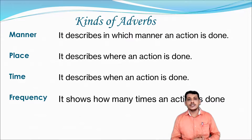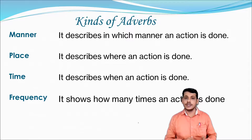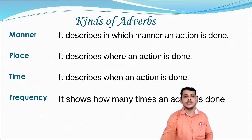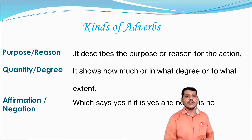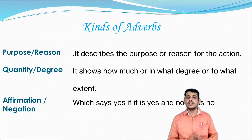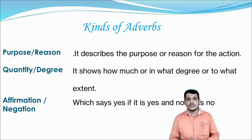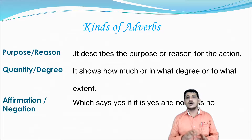In this series, we are going to see the kinds of adverbs: adverbs of manner, adverbs of place, adverbs of time, adverbs of frequency, adverbs of purpose — also called adverbs of reason — adverbs of quantity or degree, and adverbs of affirmation or negation. Based on what kind of information adverbs give in a sentence, we have formed these kinds.